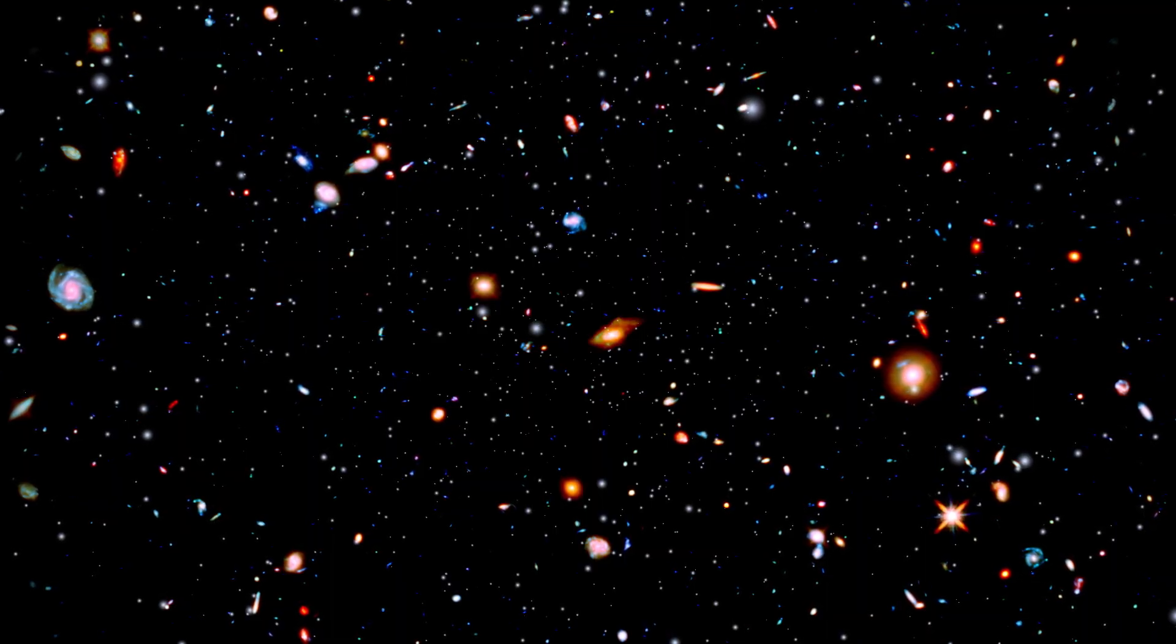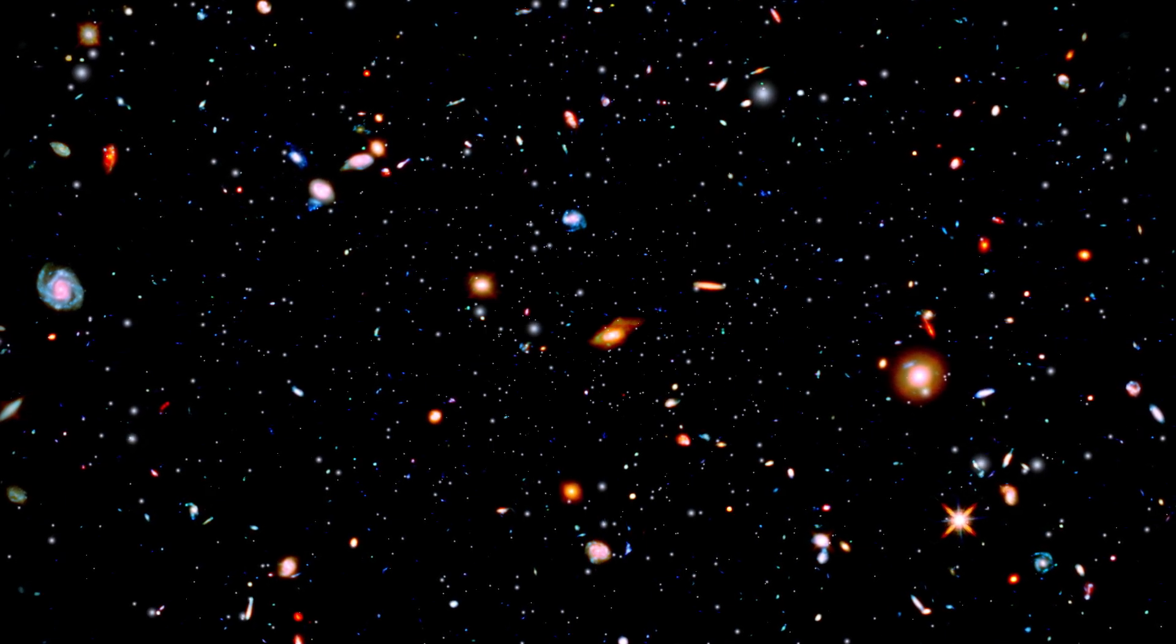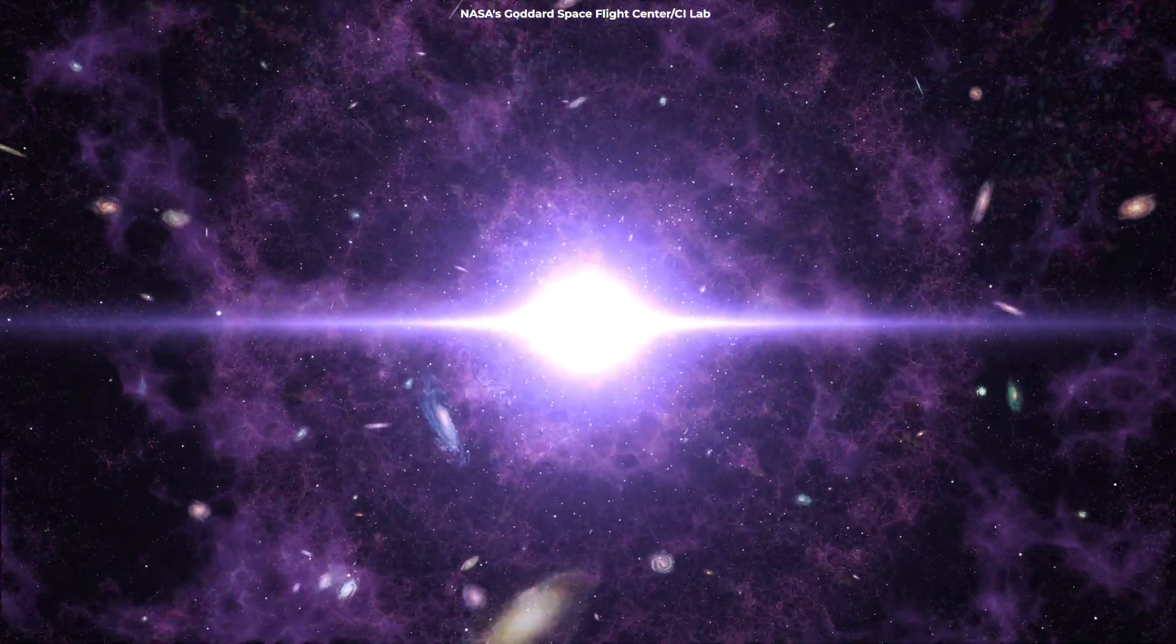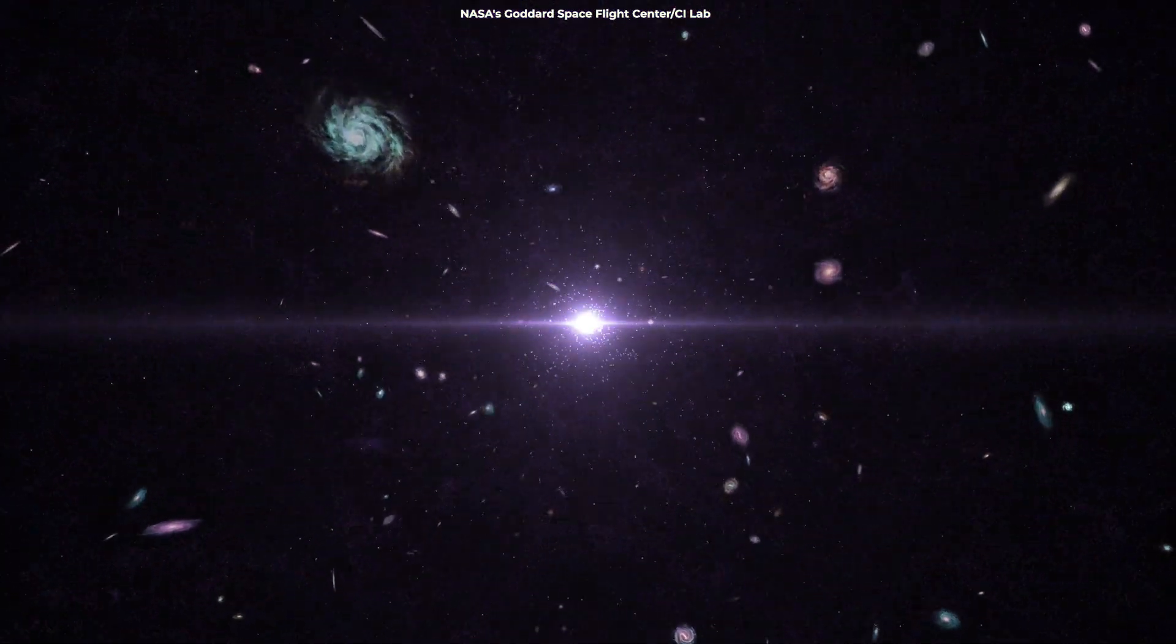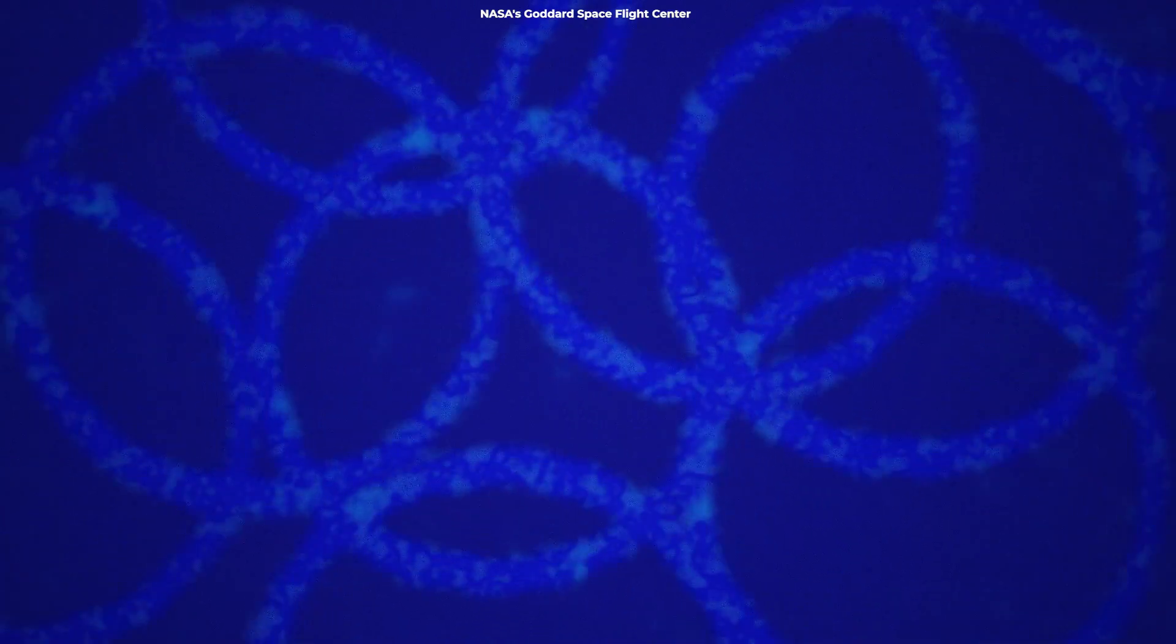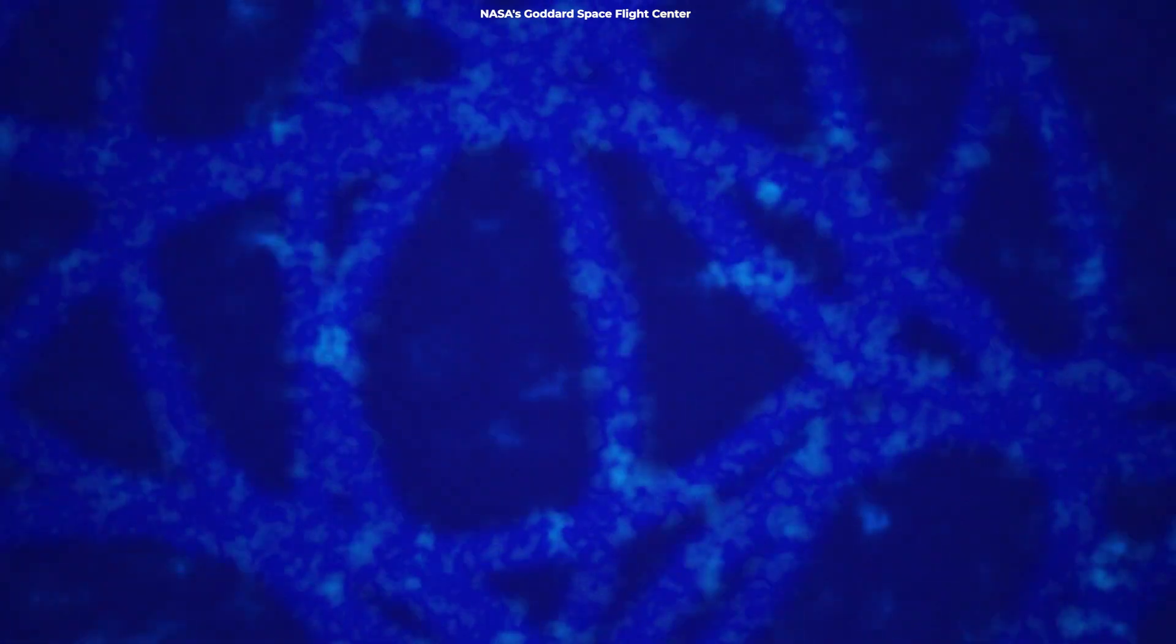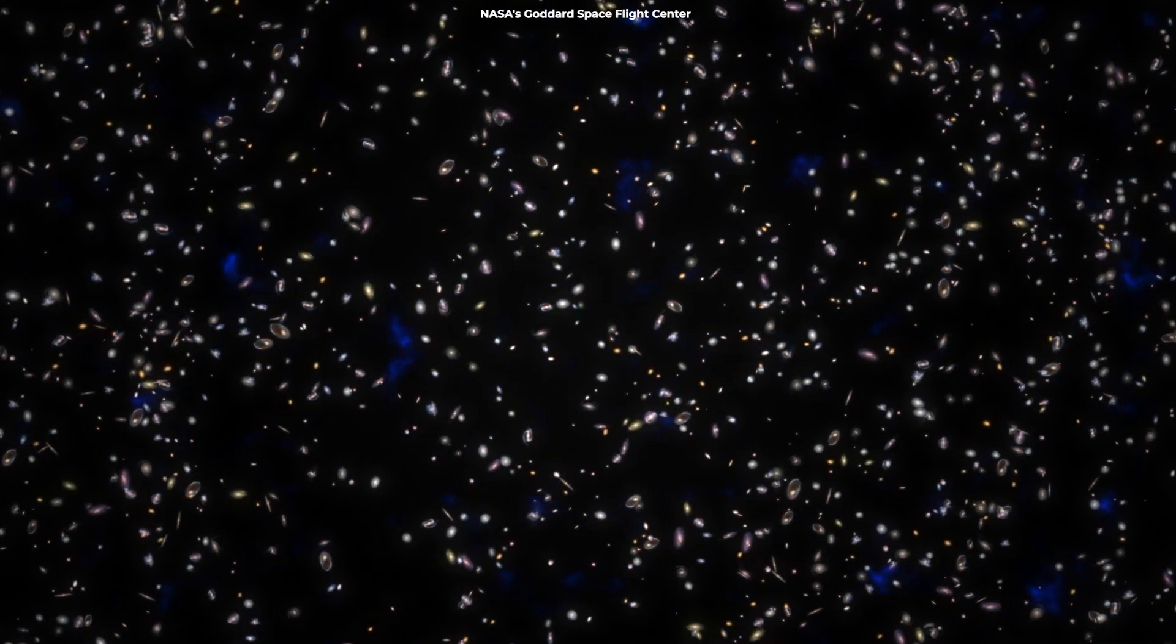By observing the earliest objects in the universe, Webb is helping us piece together how the cosmos transformed from a hot, dense state to the complex, structured universe we see today. Shortly after the Big Bang, the universe was a hot, dense plasma of particles. As it expanded and cooled, the first atoms formed, and eventually, gravity pulled these atoms together to form the first stars and galaxies.